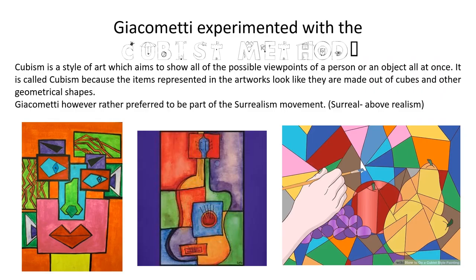Alberto Giacometti experimented with the cubist method. Cubism is a style of art which aims to show all of the possible viewpoints of a person or an object all at once. It is called cubism because the items represented in the artworks look like they are made out of cubes and other geometrical shapes. Giacometti, however, rather preferred to be part of the surrealism movement — surreal meaning above realism.